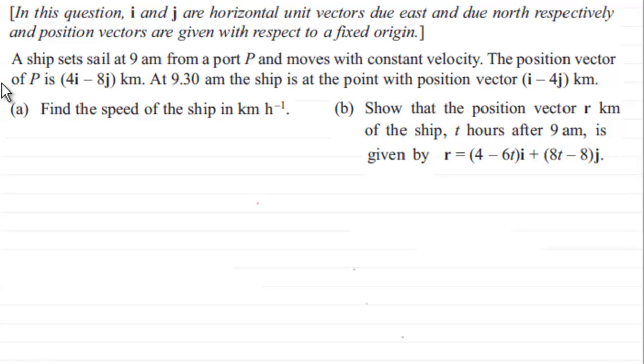What I'll do is just read it through though. What we got here is in this question i and j are horizontal unit vectors due east and due north respectively. And position vectors are given with respect to a fixed origin.